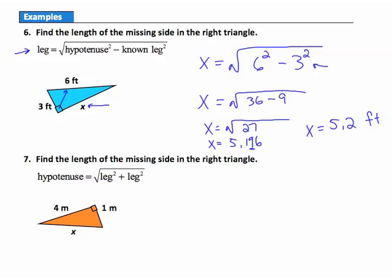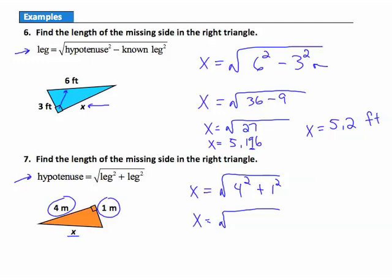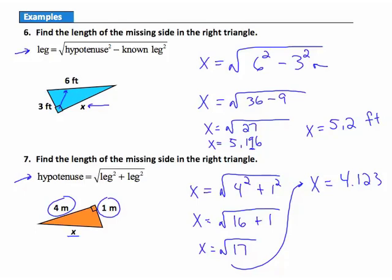Example 7: find the length of the missing side — the hypotenuse — in the right triangle. Using the formula: x = √(leg² + leg²). The legs are 4 and 1. So x = √(4² + 1²) = √(16 + 1) = √17. Looking up the square root of 17 gives 4.123. The 3 tells me to keep the 2 the same, so rounded to the hundredths place, the hypotenuse is approximately 4.12 meters.